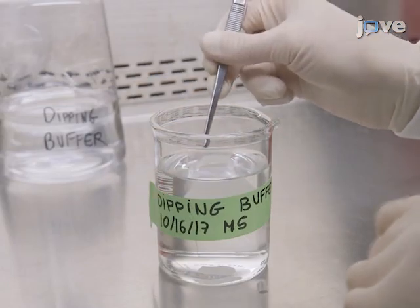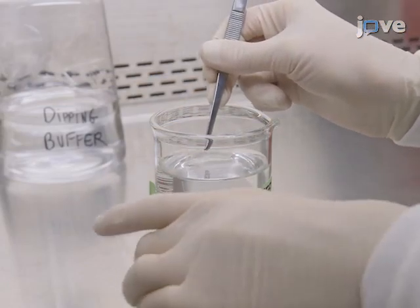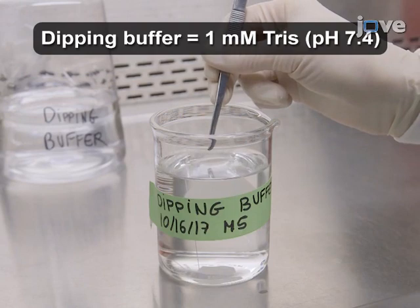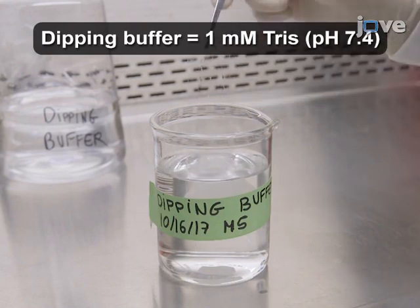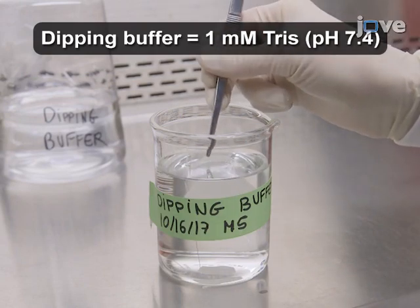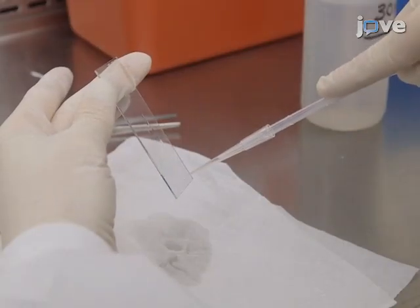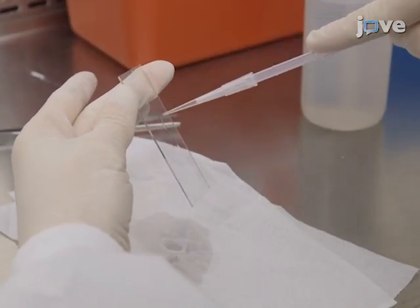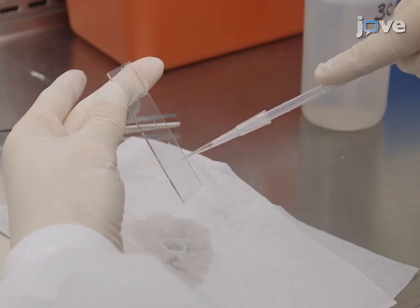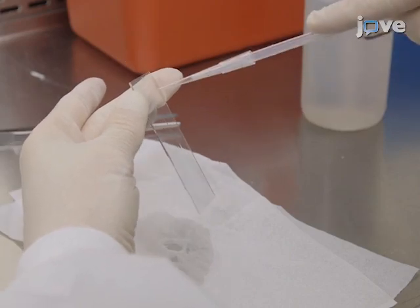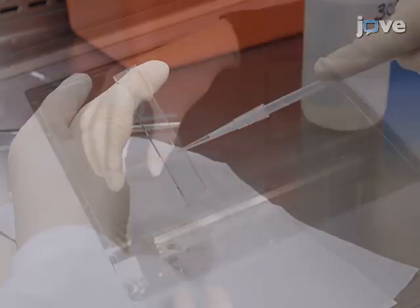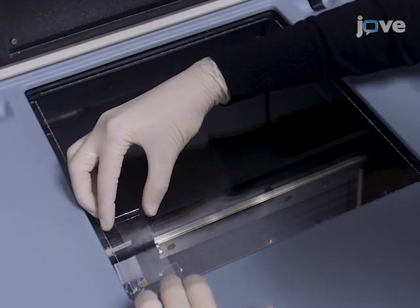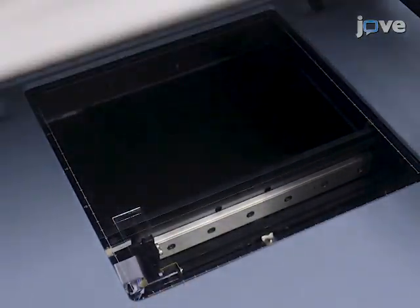Next, immerse the slide twice into 200 milliliters of a freshly prepared dipping buffer. Dry the microarray carefully for approximately one minute by aspirating excess fluid very carefully from the top to the bottom of the slide without touching the slide surface. Analyze the slide in a microarray scanner reader as demonstrated later in this video.